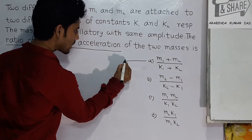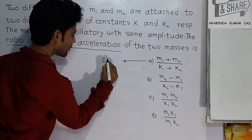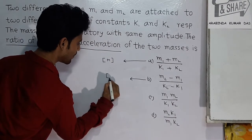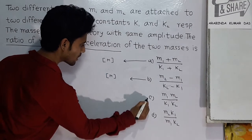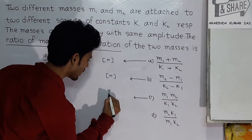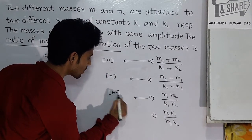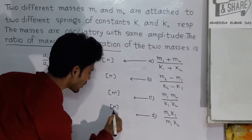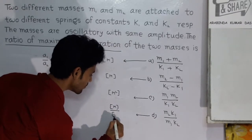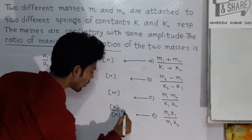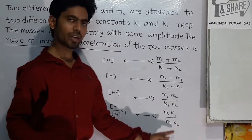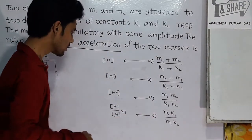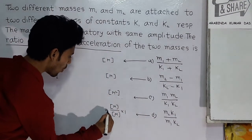The dimension of option B is M. The dimension of option C is M squared. Option D has dimension M upon M, which equals 1. K1 upon K2 is a ratio of spring constants, and its dimension is also 1. So the dimension of option D is 1.